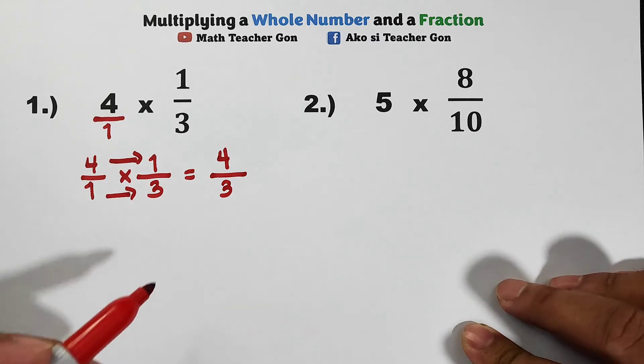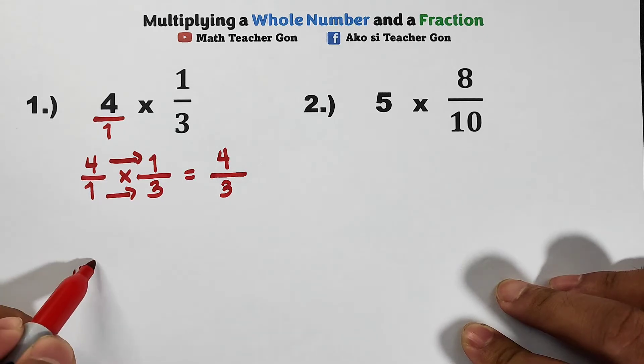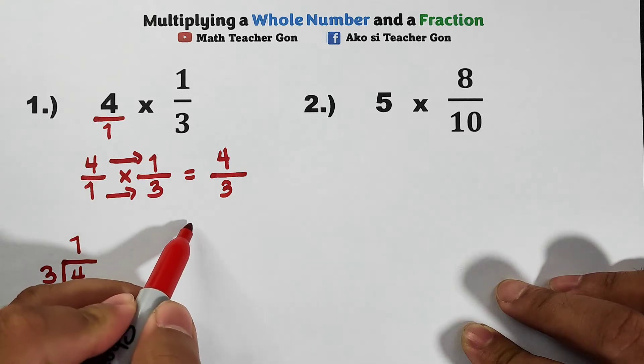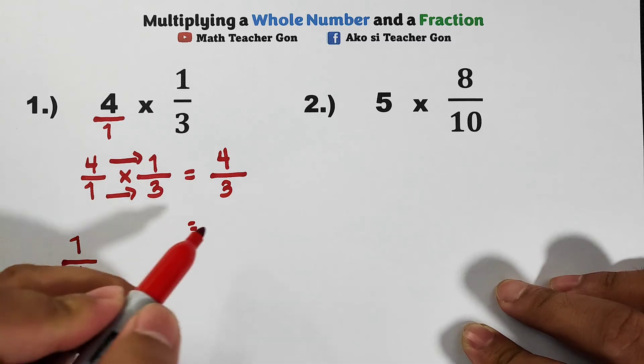First we will divide the numerator 4 by 3. So we have 4 divided by 3, that equals 1. 1 times 3 equals 3, and then subtract: 4 minus 3 equals 1. So we are done dividing. The whole number is your quotient here at the top, that is 1.